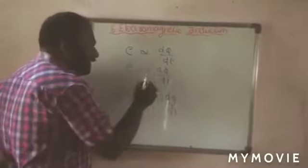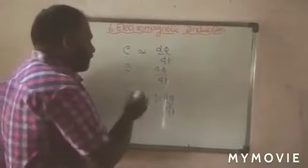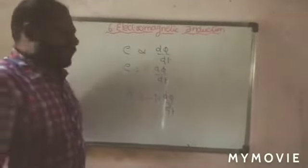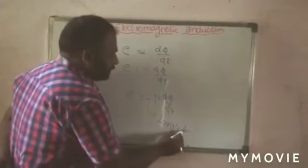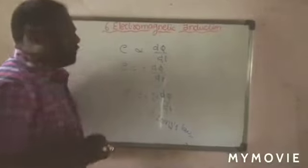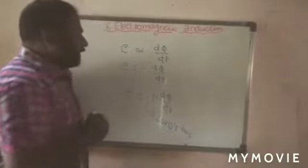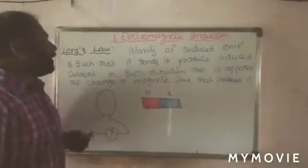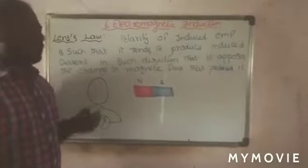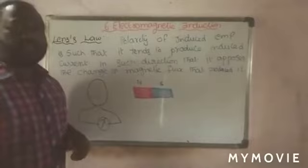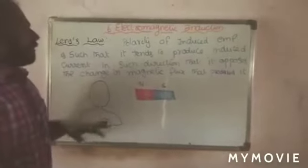Now we are going to consider the direction of induced EMF. The direction of induced EMF is represented with a negative sign, and that is explained by Lenz's law. The magnitude of induced EMF is given by Faraday's law, and the direction of induced EMF is given by Lenz's law.